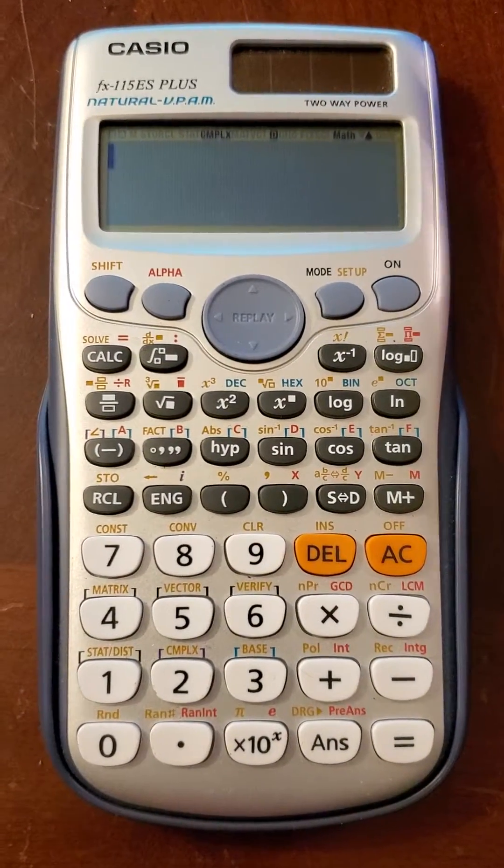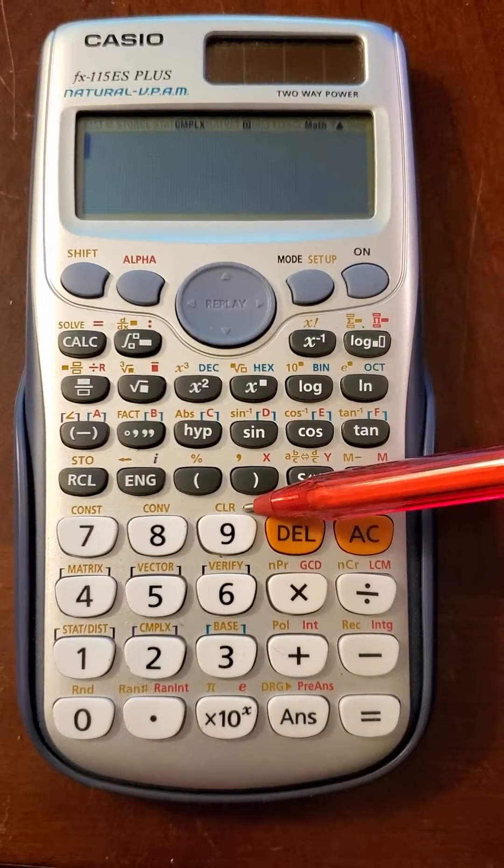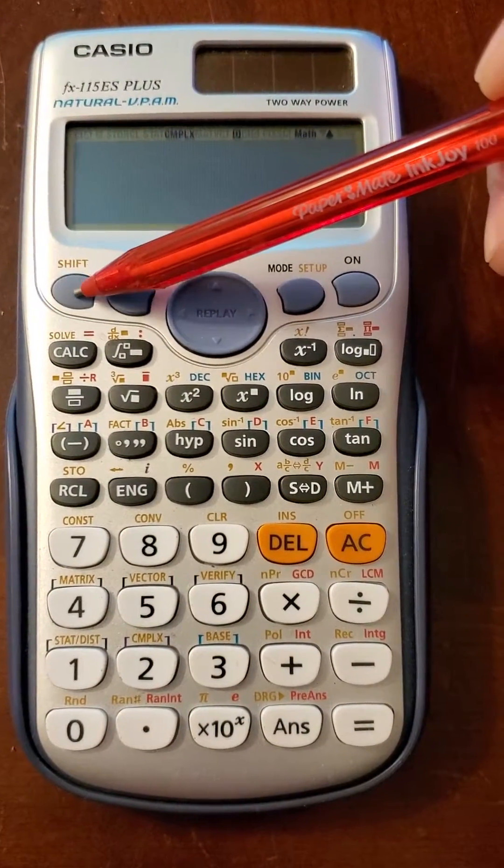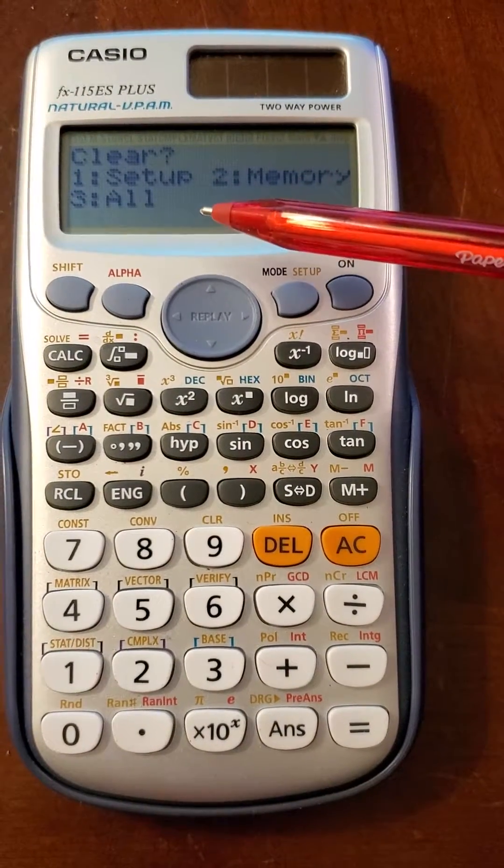What we want to do is we want to clear. Notice that is in yellow so we're going to have to hit the shift button and then number nine and we've got some choices.